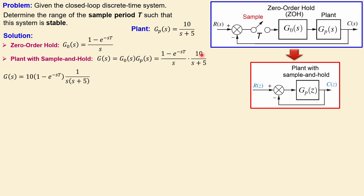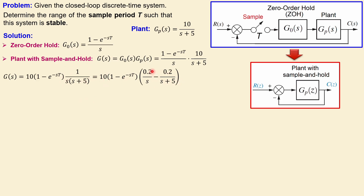We can write this as 10 in front and then combine numerator and denominator to get this second-order expression. The next step is to perform partial fraction expansion, splitting into 0.2/s minus 0.2/(s+5). You can always verify this is correct by multiplying numerator and denominator back together.